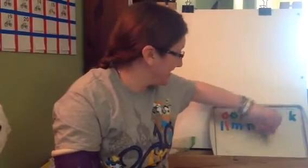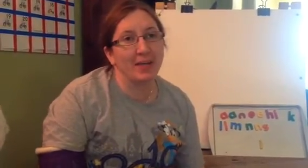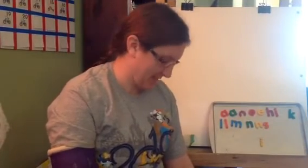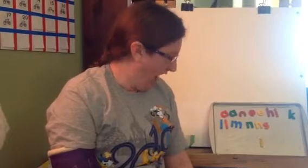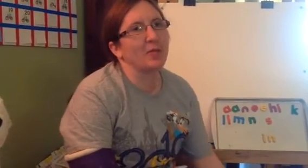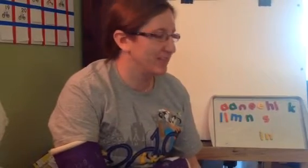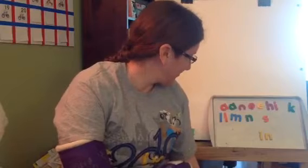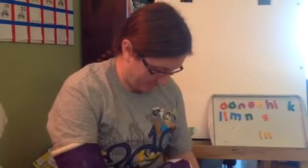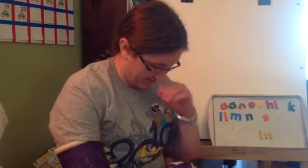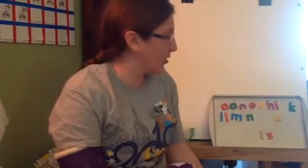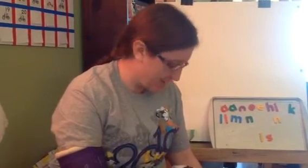The first word we're gonna make is I by itself. Make sure if you didn't do I by itself, you write it down on your paper and you make it a capital I. Next I'm gonna add an N to make the word in. If you didn't make in, add it to your list. I'm gonna trade my N with an S to make the word is. If you haven't made the word is, make the word is.